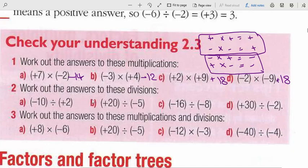The same thing works for division. 10 divided by 2 is 5, but since one is negative and one is positive, the result will be negative. 20 divided by 5 is 4; again one is negative and one is positive, so the result is negative.